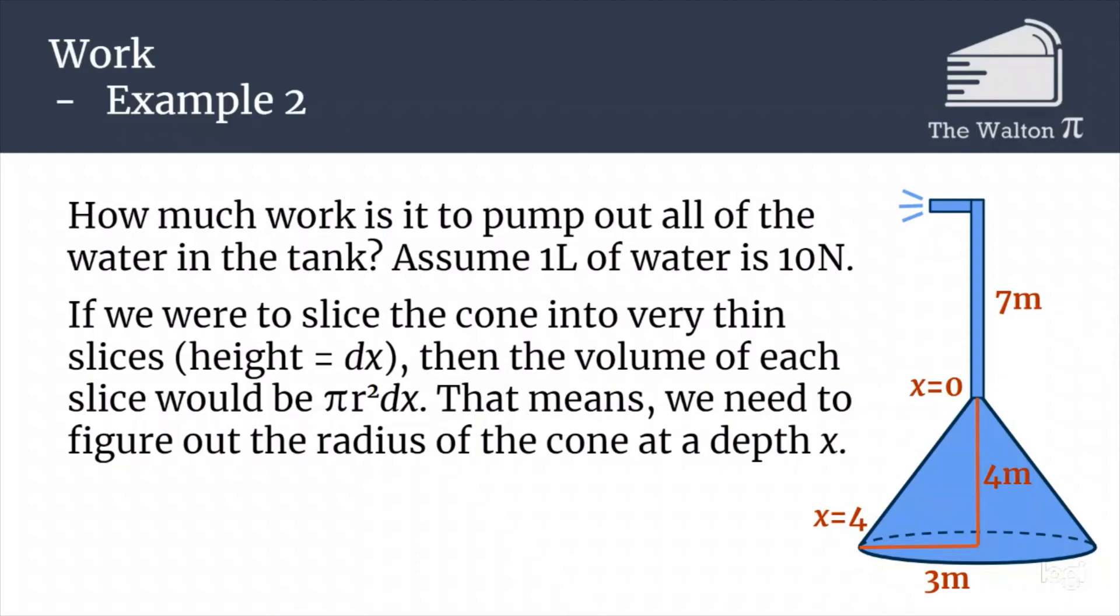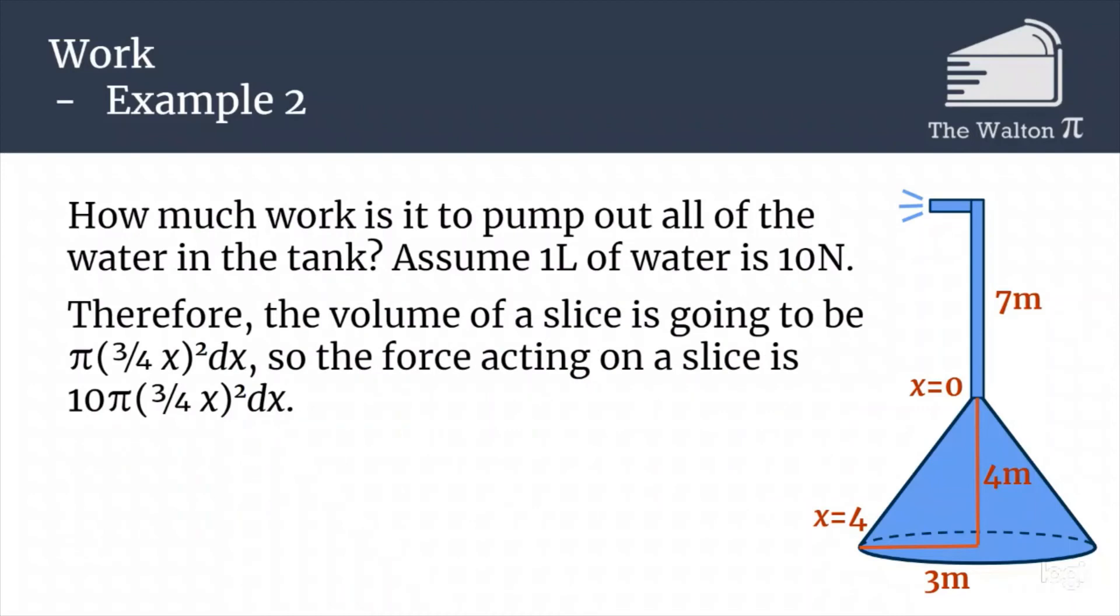That means we need to figure out what the radius of the cone is at depth x. This is why we chose x to be 0 at the top of the cone, because the radius function is going to be nice. Because this is going to form a bunch of similar triangles, we would be able to find that the radius is going to be 3/4 x. That means that the volume of one slice is pi times (3/4 x) all squared times dx, so the force is going to be 10 times the volume. The force acting on one slice is 10 pi times (3/4 x) squared dx.